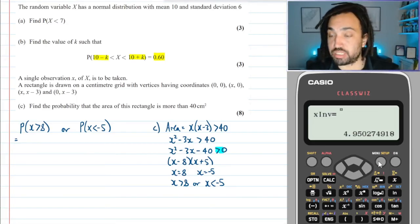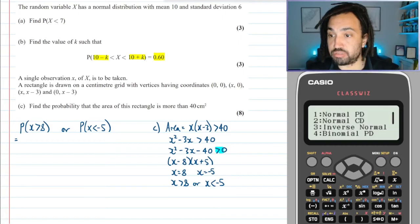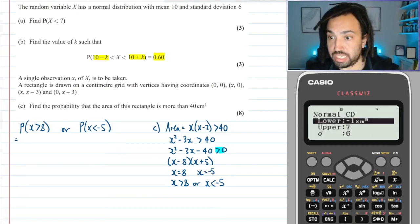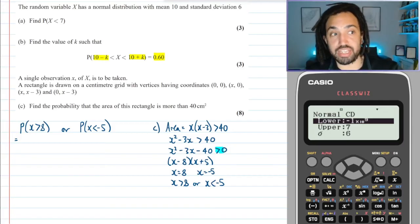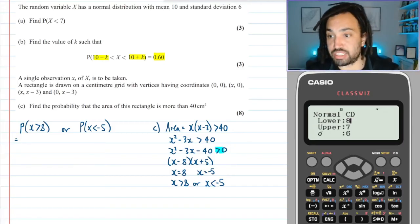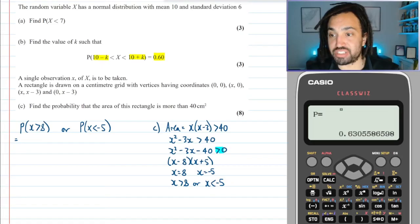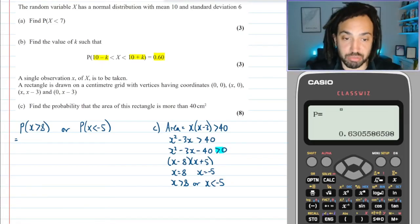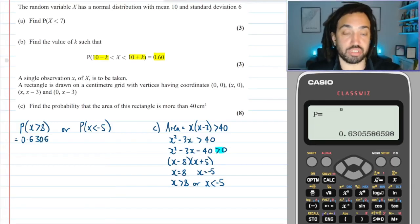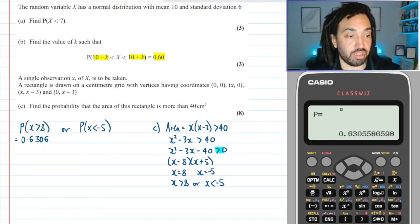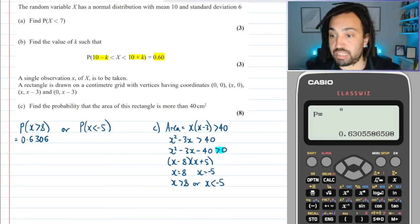Okay, so back to our calculator. We need to go to distribution, normal CD, because we're going 8 or more. Then 8 is the lower limit and the upper limit, just put in a huge number. Same standard deviation, same mean. So this gives me a probability of 0.6306.